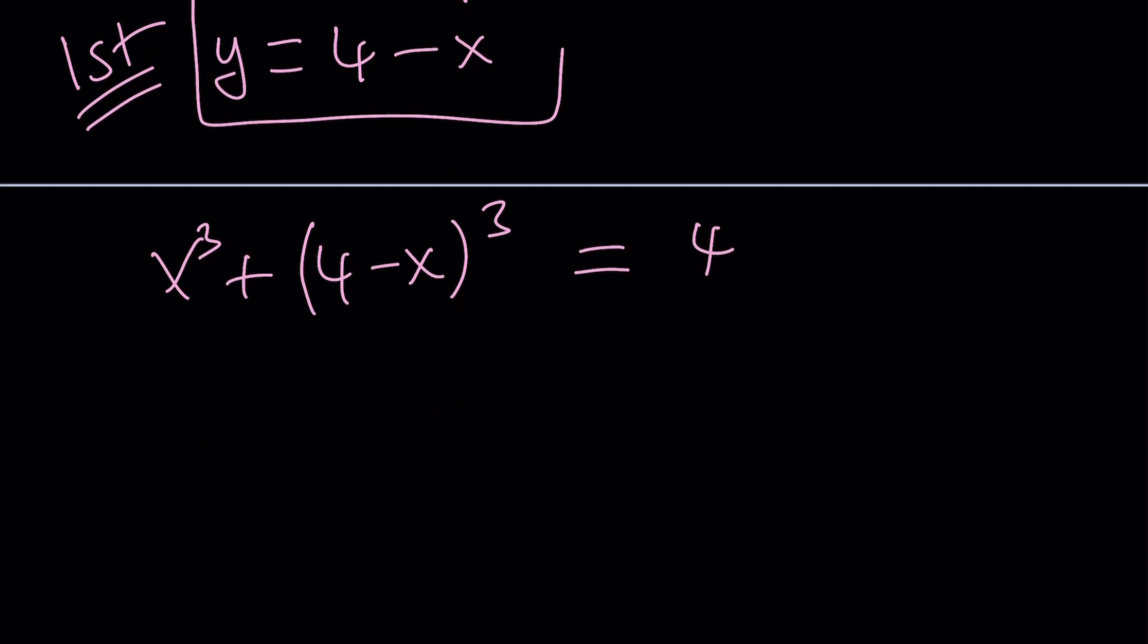We're going to cube it. Let's use the formula. You can use the binomial theorem for this, or there's a formula that I use. But let's use binomial theorem this time. We start with 4 cubed minus 3 times 4 squared times x plus 3 times 4 times x squared. You get the pattern a cubed minus 3a squared b plus 3ab squared minus b cubed, which is x cubed. And that'll be equal to 4.